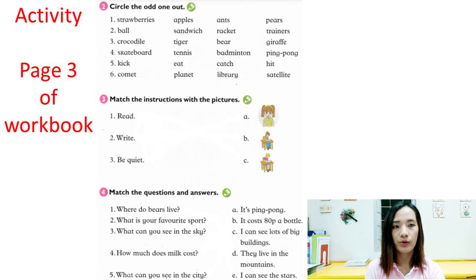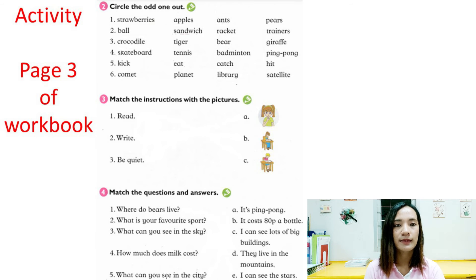Next, page three. Number two: circle the odd one out. This means you need to circle the word that does not belong in the group. For number one, the words are strawberries, apples, ants, and pears. What is the word that does not belong? The answer is ants.